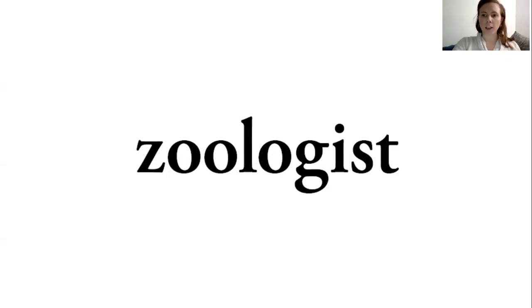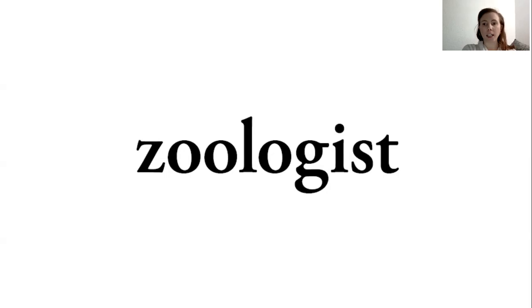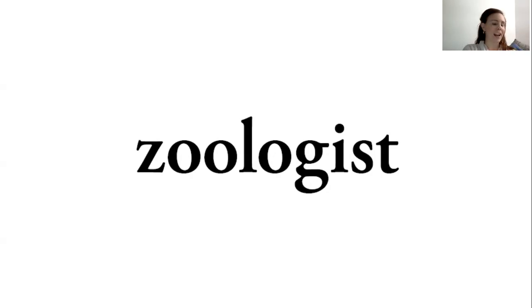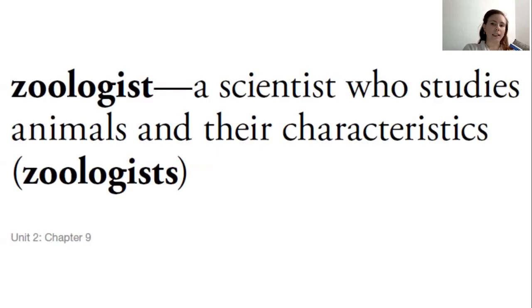This first word, you can either say 'zoologist' or 'zoologist.' I'm going to say 'zoologist' because we know that two O's together would make that O sound, and the '-ologist' part means someone who studies something. 'Zo' has to do with animals, so a zoologist is a scientist who studies animals and their characteristics.